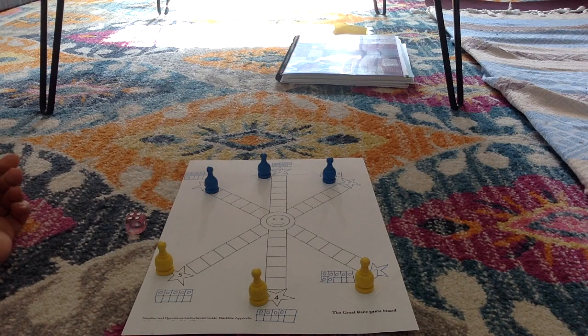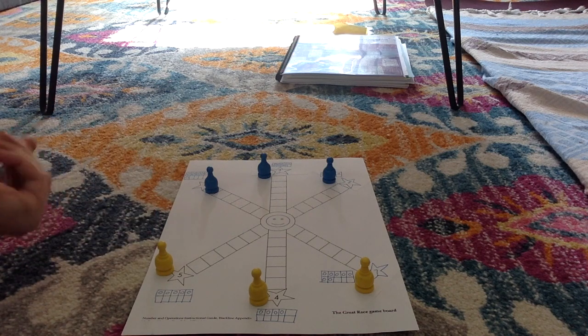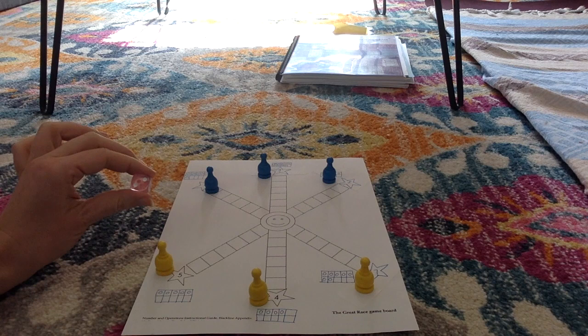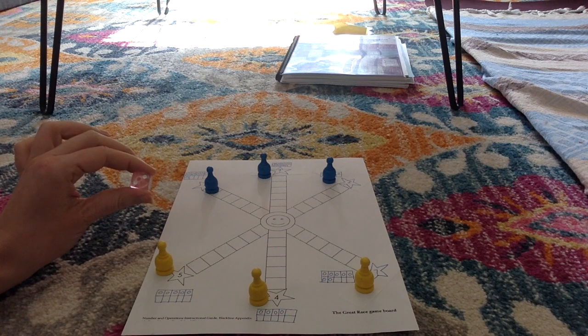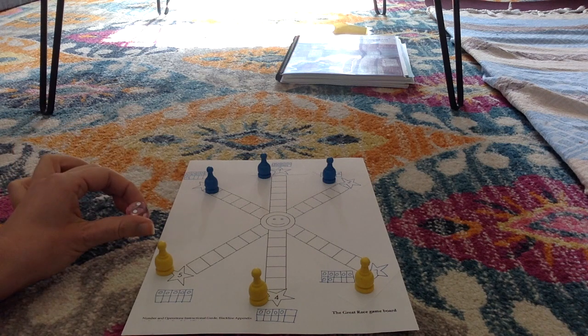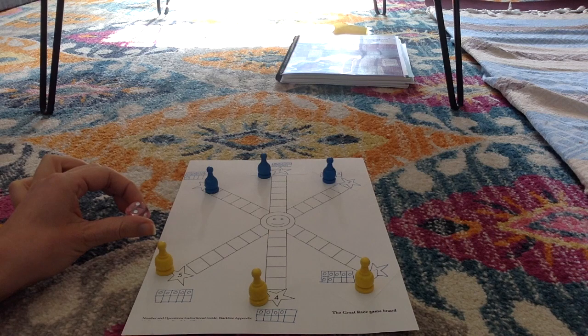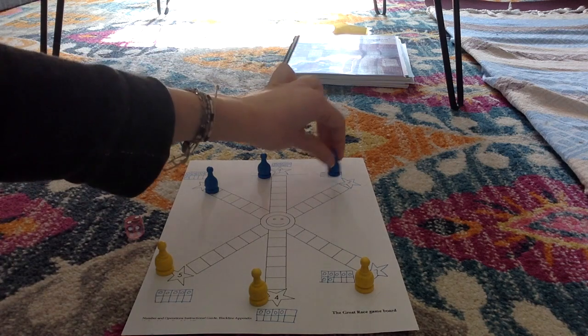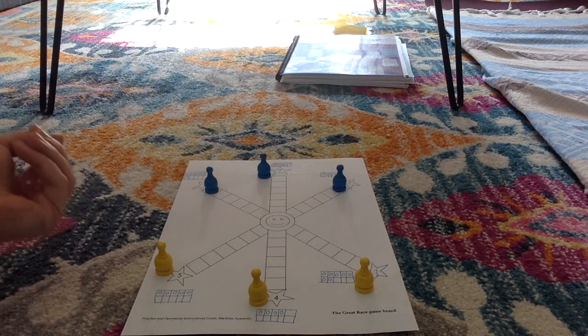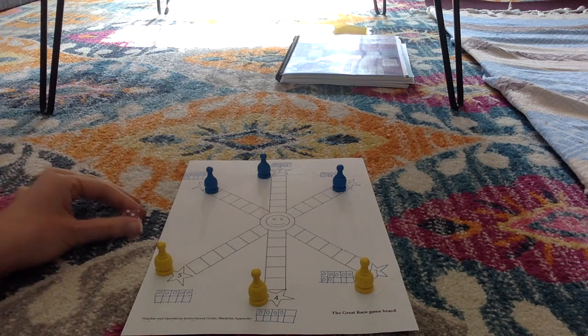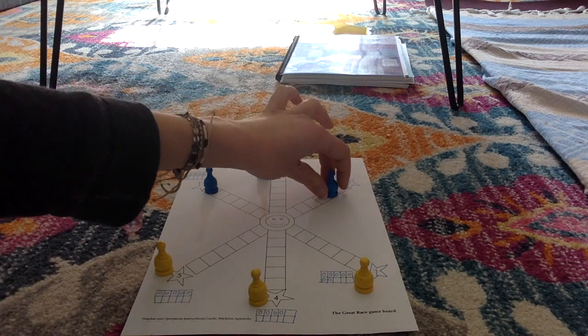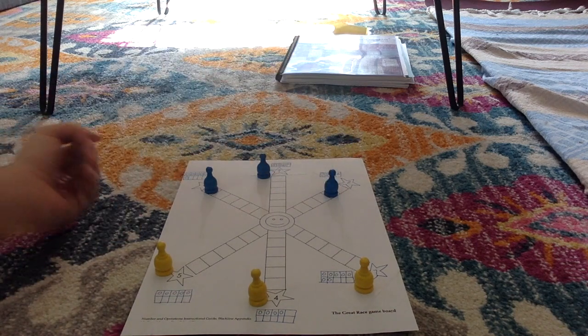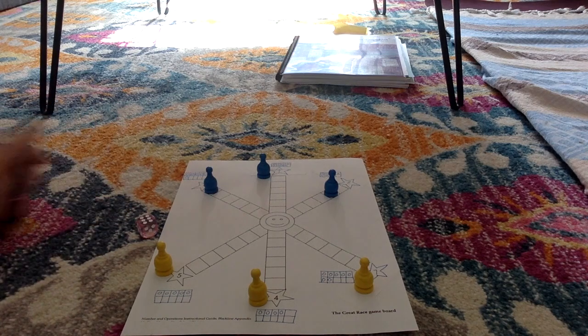Now it's the second player's turn. A two has been rolled. What goes with two to get to ten? The answer is eight. The player with the eight gets to go. Then you keep rolling and moving until someone gets to the middle.